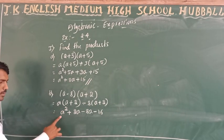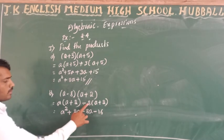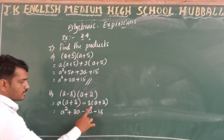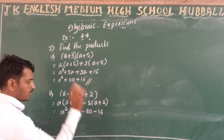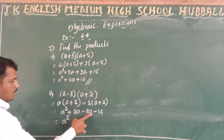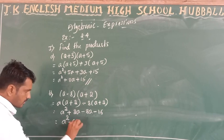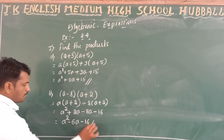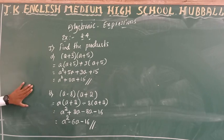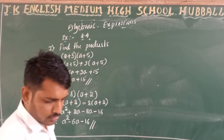Then minus 8 into a gives minus 8a, and minus 8 into plus 2 gives minus 16. So we get a squared plus 2a minus 8a minus 16, which simplifies to a squared minus 6a minus 16. This is the answer for question b.